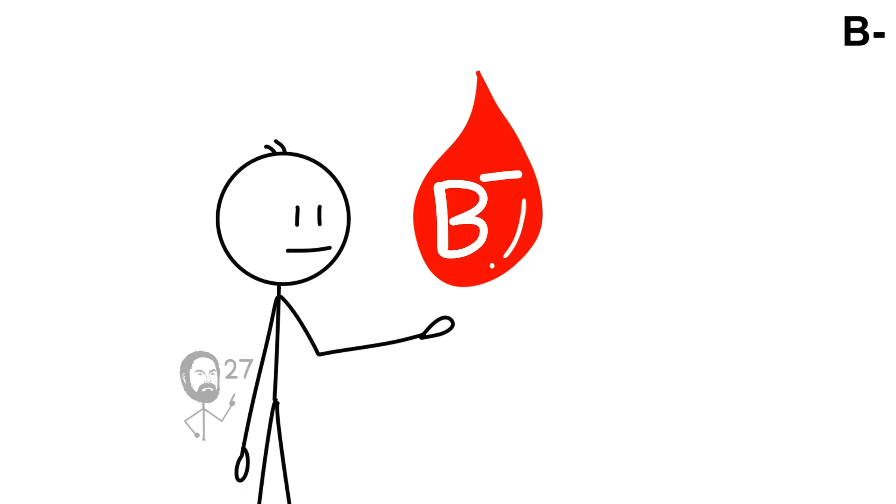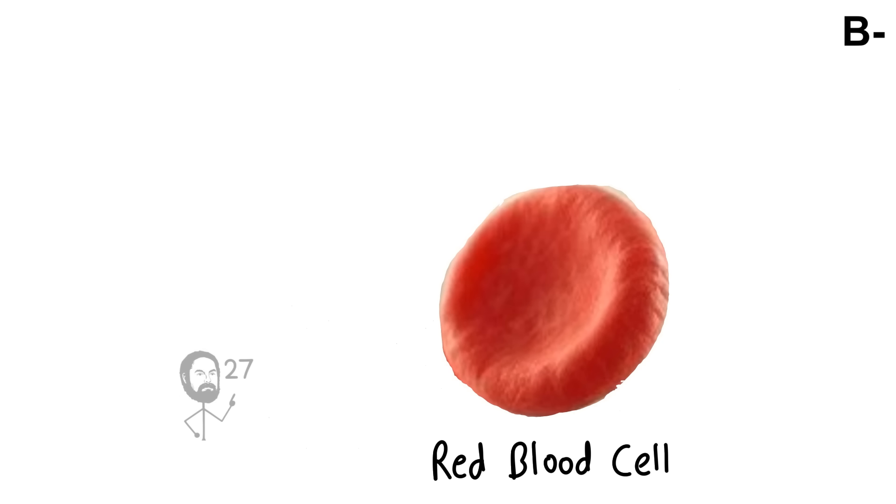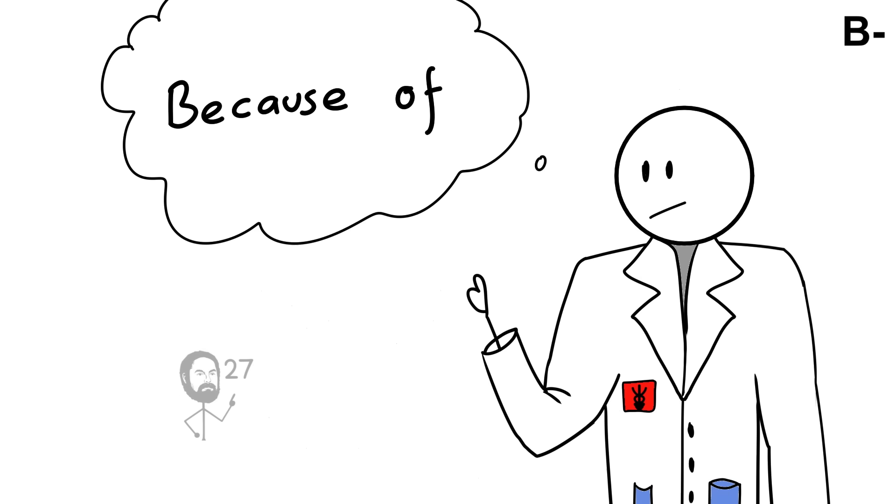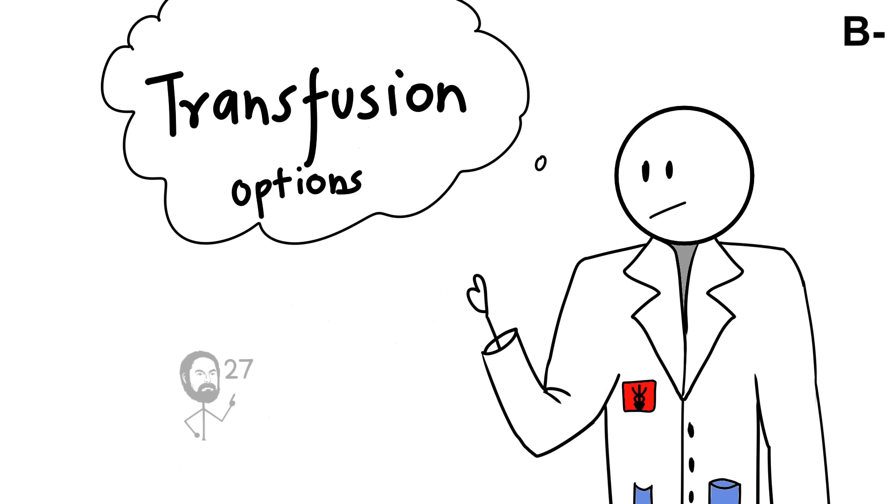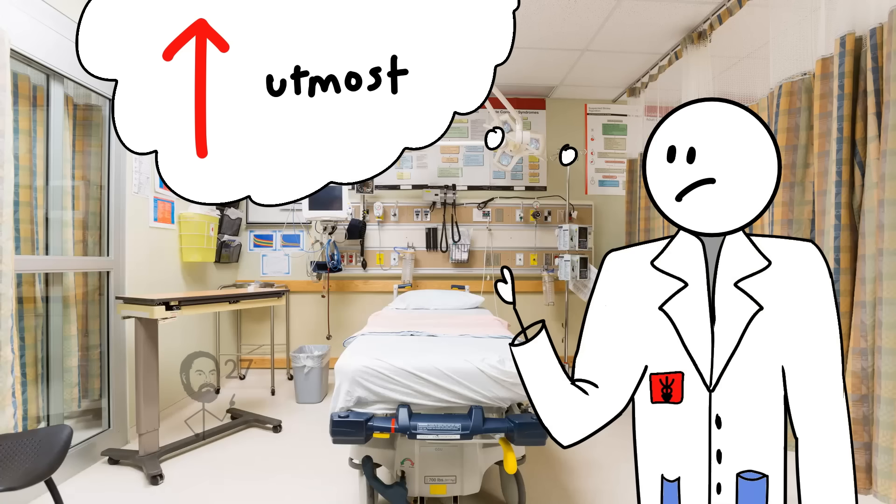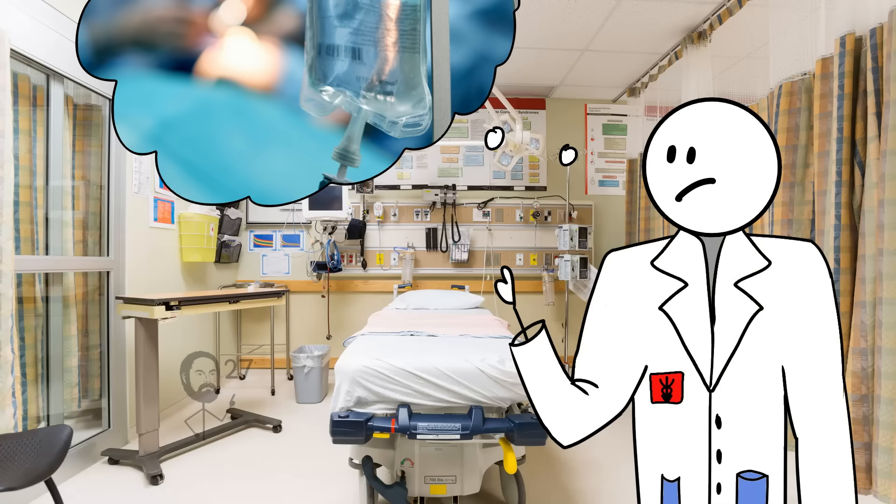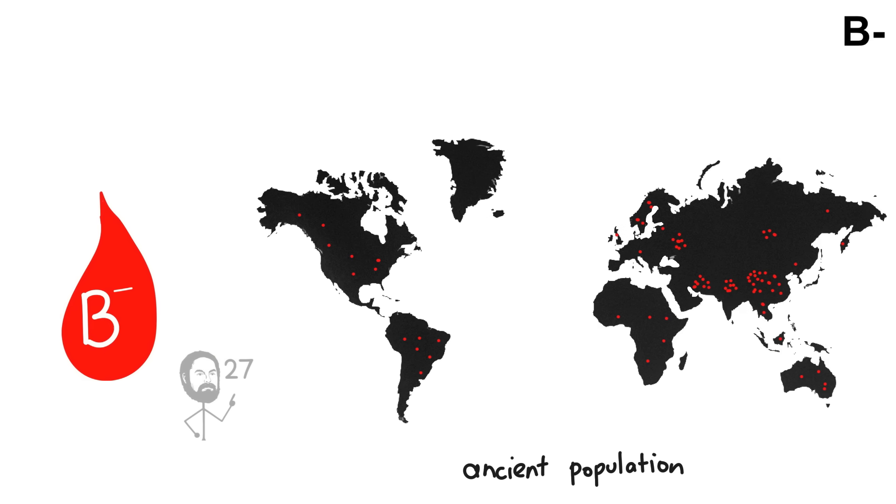B-negative is one of the rarest blood types, found in only about 1% of the global population. It is defined by the presence of B antigens on red blood cells, but the absence of the RHD factor. Because of this configuration, B-negative individuals can only safely receive blood from B-negative or O-negative donors, making their transfusion options very limited. In hospitals, this scarcity means that B-negative donations are carefully managed and considered high priority for patients who rely on them. From an evolutionary perspective, type B likely spread unevenly across ancient populations, with higher concentrations in parts of Asia and lower representation in Europe and the Americas. The absence of the RHD factor further narrows its distribution, contributing to its extreme rarity today.